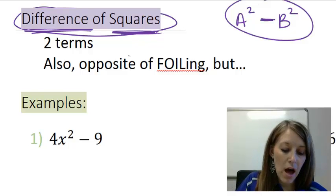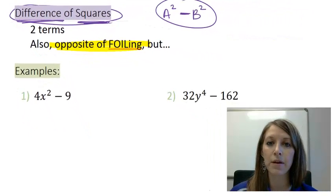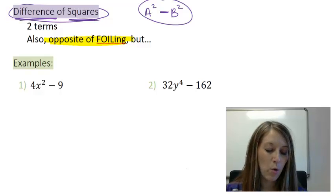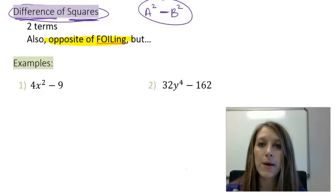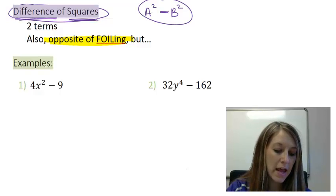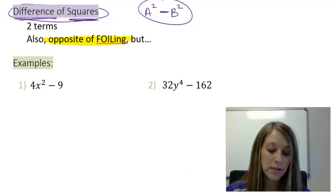Now this is also the opposite of foiling, but in this foil, something special is going to happen. So we're going to do this unfoil process in example one, but you're going to see what special is going to happen here. So let's go ahead and again, always double check. Do I have any common factors throughout? And I do not.